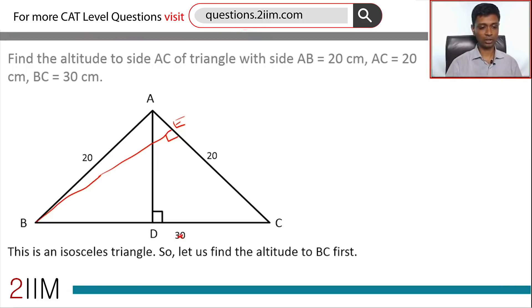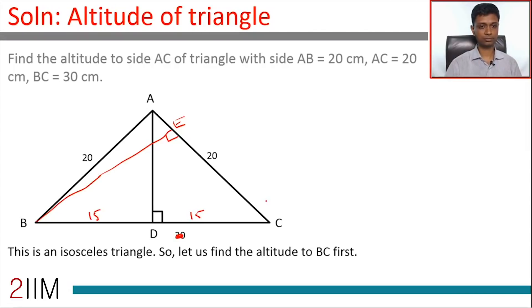These two triangles are congruent. So the overall is 30, so DC is 15, BD is 15.